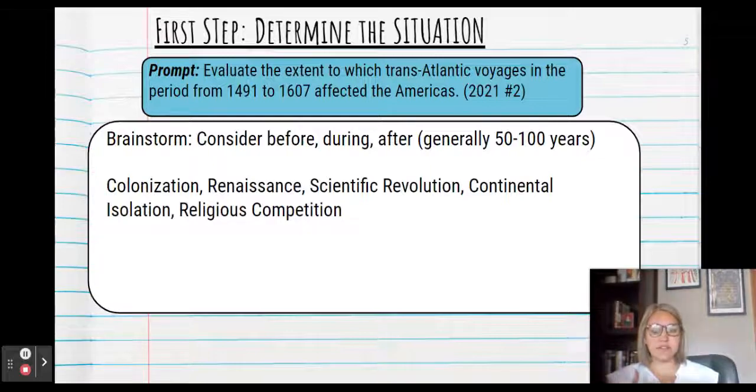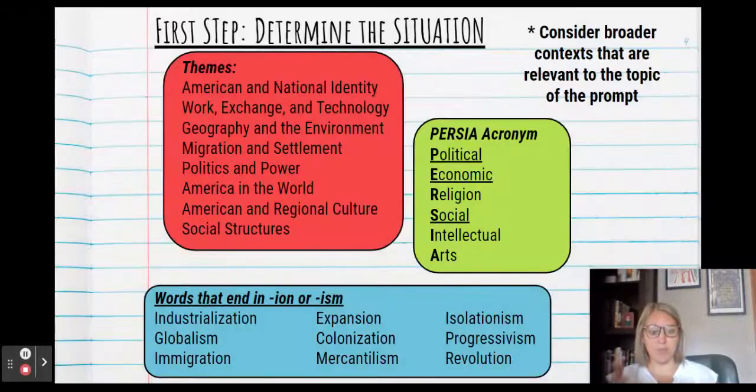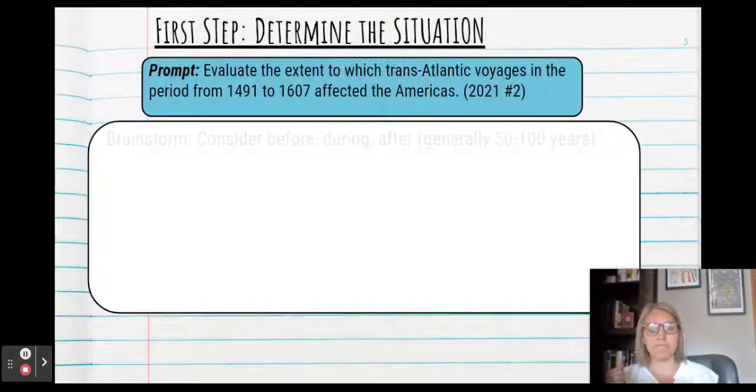So here are some that are related to this prompt. Colonization, the Renaissance, scientific revolution, continental isolation, and religious competition. A lot of these pertain to the words that end in ION or ISM. They also, you can see I've got religious competition that's connected to the PERSIA acronym, or the Renaissance that's artistic, scientific revolution that's related to the theme of work exchange and technology. And so you can see that I've pulled these words from these different ways of brainstorming.